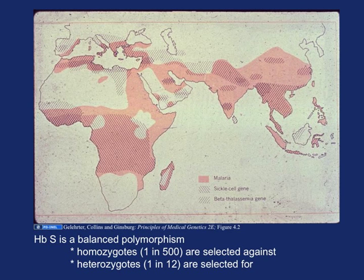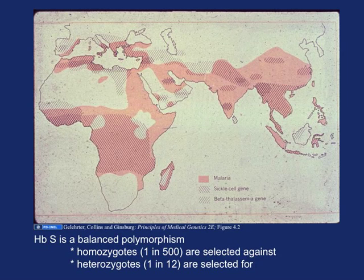Here in pink is where malaria is a big problem. Hatching one way shows where the sickle cell gene is prevalent; hatching the other way shows where the beta-thalassemia gene is prevalent. Both beta-thalassemia and sickle cell anemia overlay pretty well with malaria, just as in the alpha-thalassemia story. We're all pretty convinced in the genetics world that malaria has been the selective pressure — the heterozygote advantage is what has kept this allele so common.